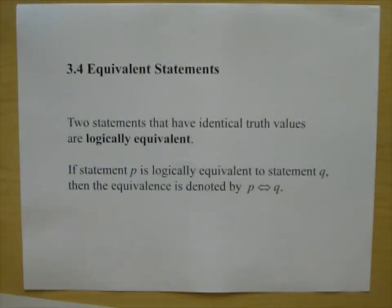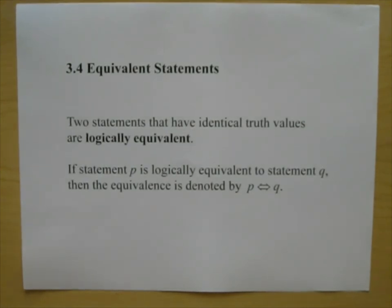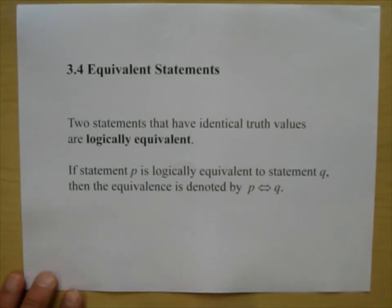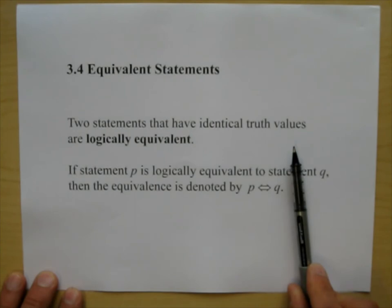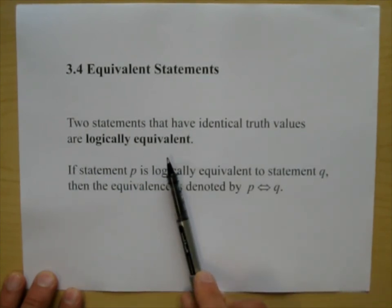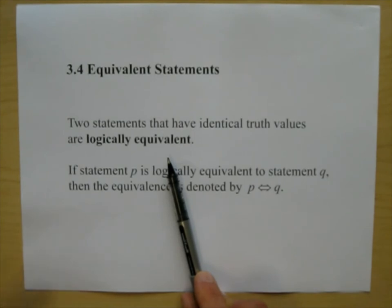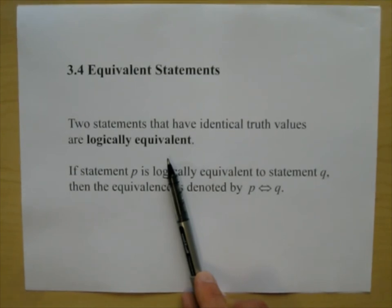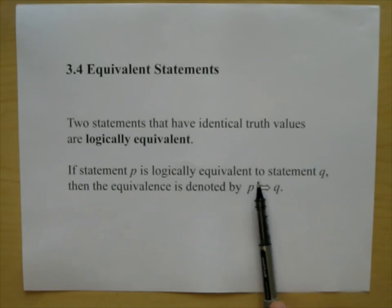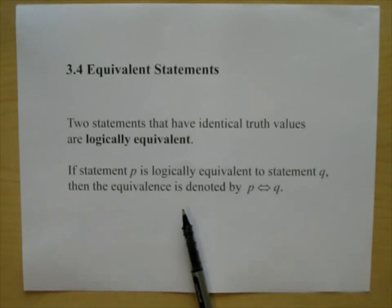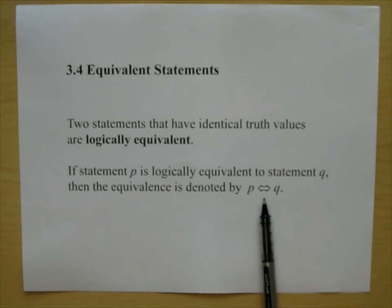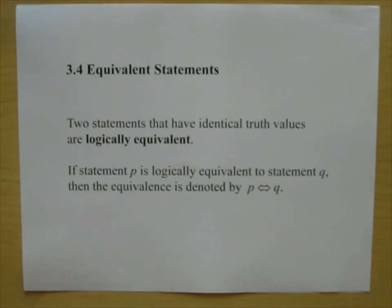Let's go ahead and finish up our chapter on logic, section 3.4. Two statements that have identical truth values are logically equivalent. You put them on truth tables and see if the final columns are identical. If statement P is logically equivalent to statement Q, the equivalence is denoted by a double arrow. In this section, we are going to be looking at some important equivalent statements.